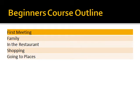Here is the course outline of Mastering Conversation for Beginners. The first module covers our first meeting — what do we say when we first meet a person — then we move on to family, talking about our family, and normal conversations in a restaurant, when we are shopping, or when we are trying to get directions and go to places. After this module, we are going to have a review session.